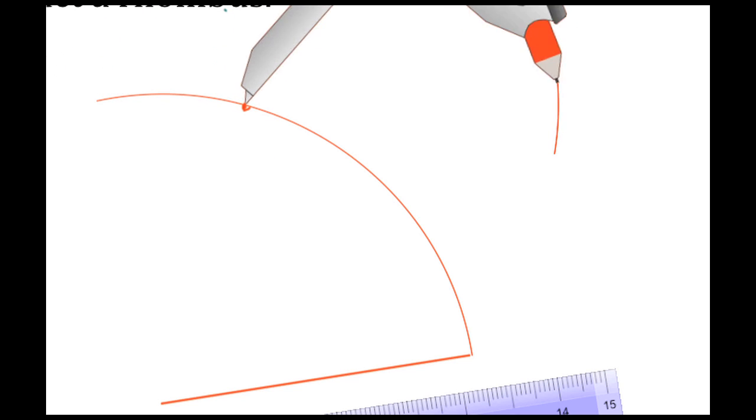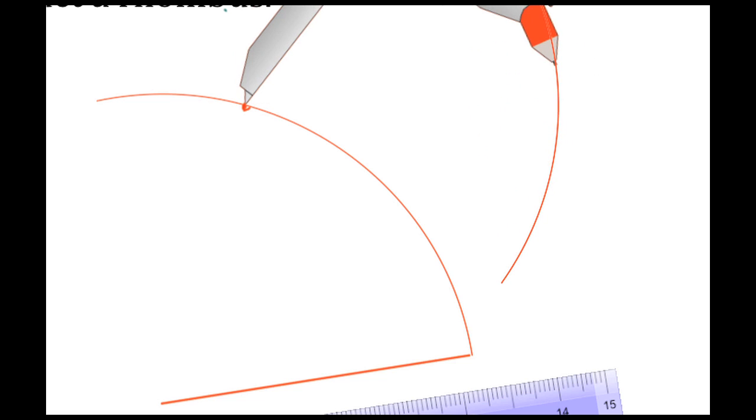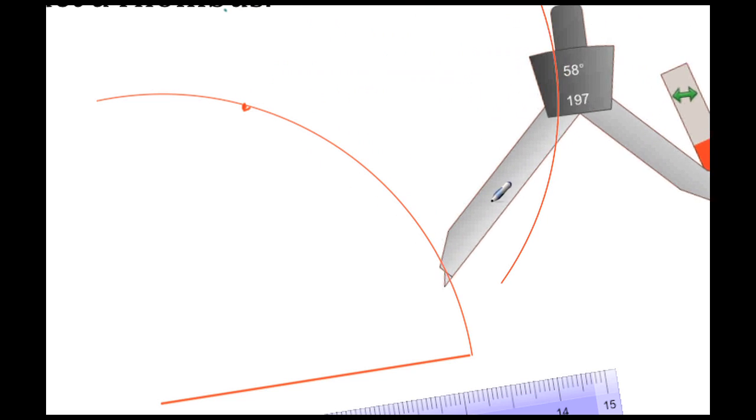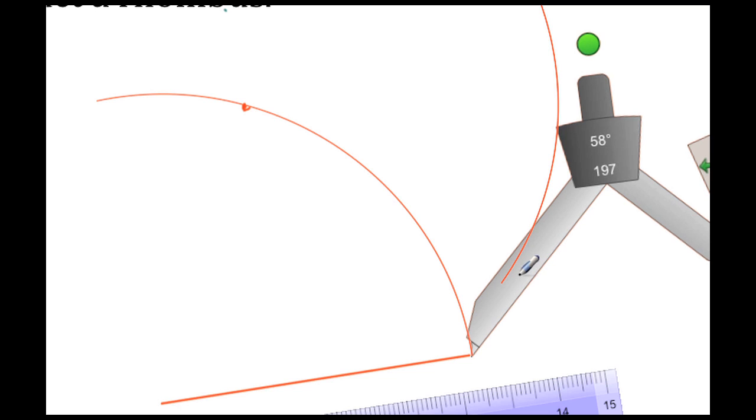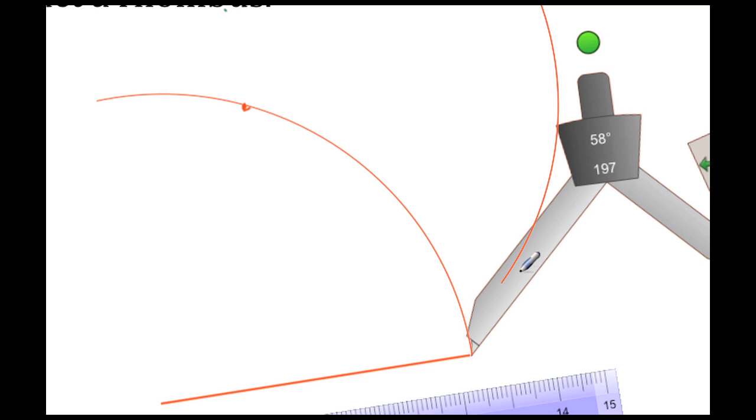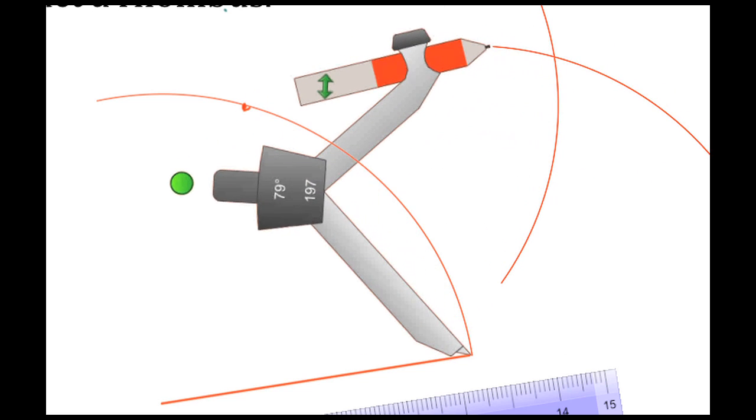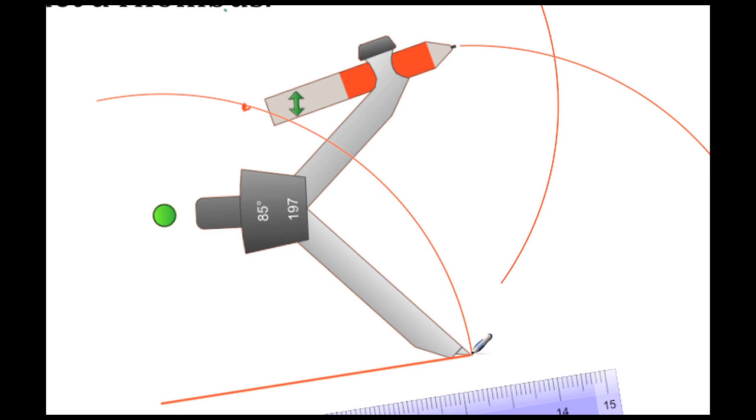All right, with this arc done, I move the compass down to this other end of the line segment that I started with. Again, I'm going to draw another arc, and that arc is going to match the radius from this point.